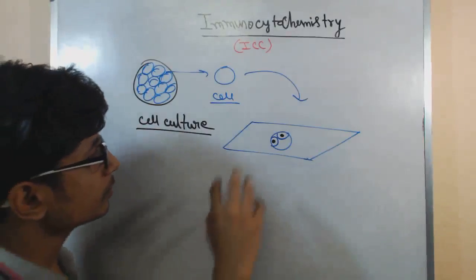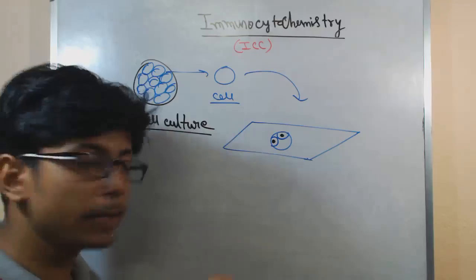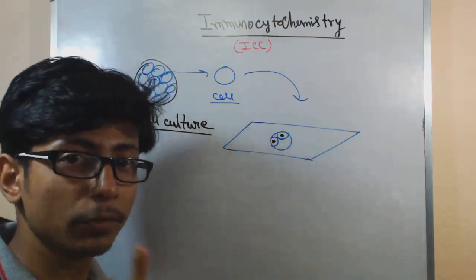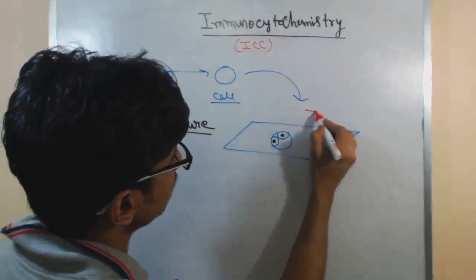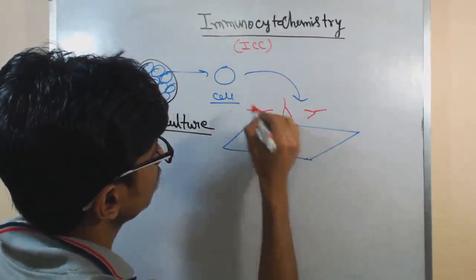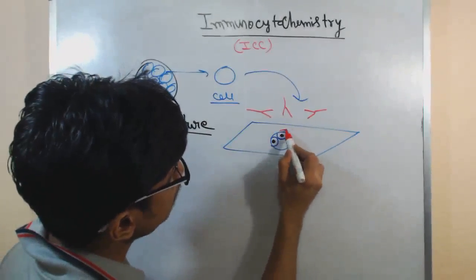Now, what we do, we add that antibody that specifically binds with this antigen that we want to find. Let's say this is the antibody. We add that antibody. Now, this antibody binds with the specific antigen.